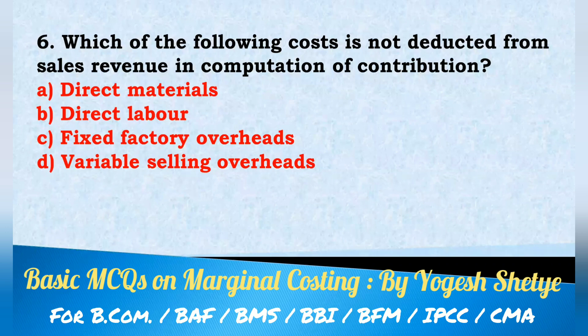Question 6: Which of the following cost is NOT deducted from sales revenue in computation of contribution? Options: direct material; direct labor; fixed factory overheads; variable selling overheads. Answer: fixed factory overheads cost is not deducted from sales revenue in computation of contribution. Answer C.